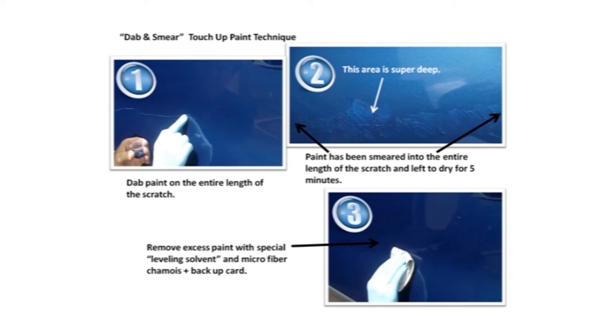And the cool part is, you can redo this technique on a scratch as many times as you wish without harming the surrounding finish. So practice makes perfect. If you don't get it perfect the first time, you can remove all the paint and you can apply the paint and dab and smear. And you can level it and do it as many times as it takes.